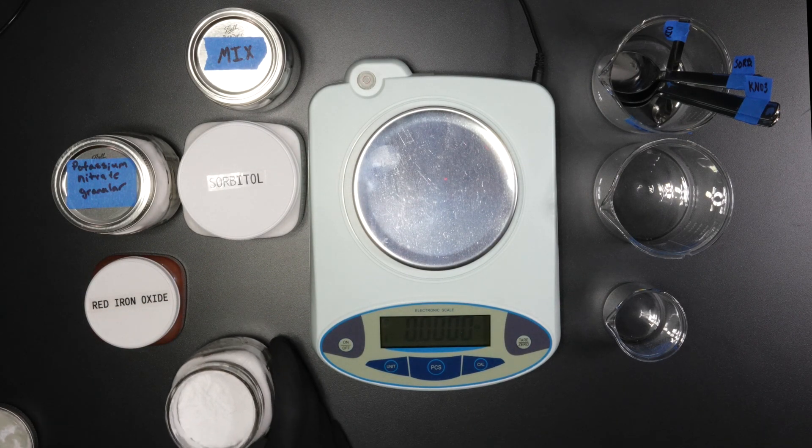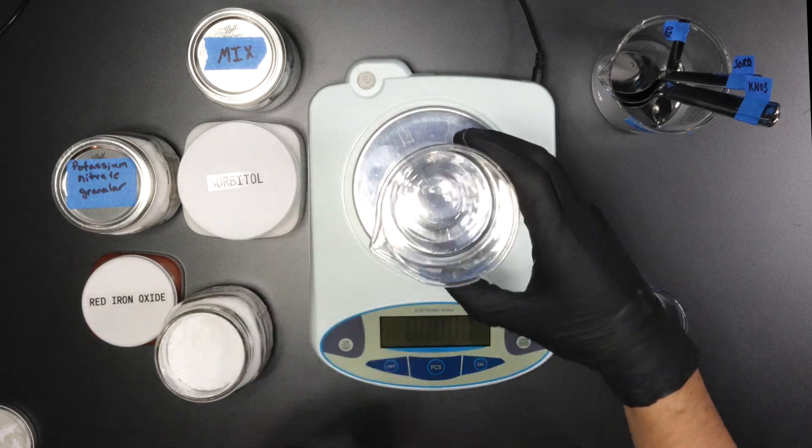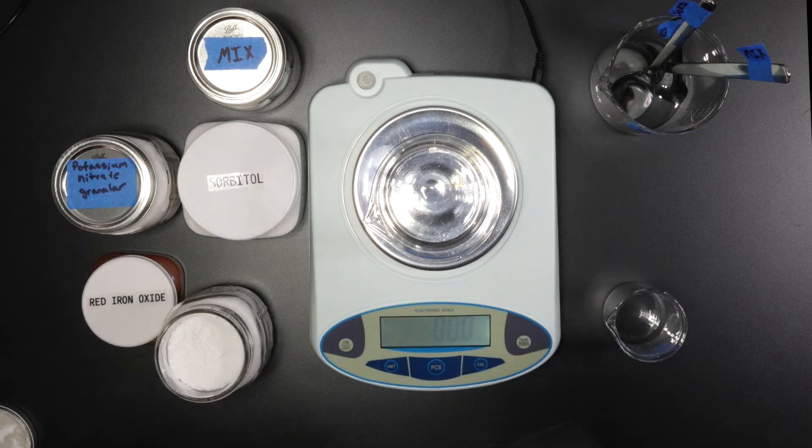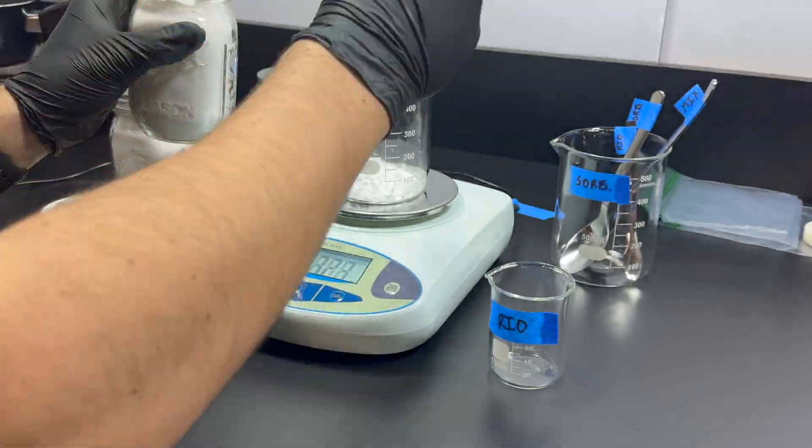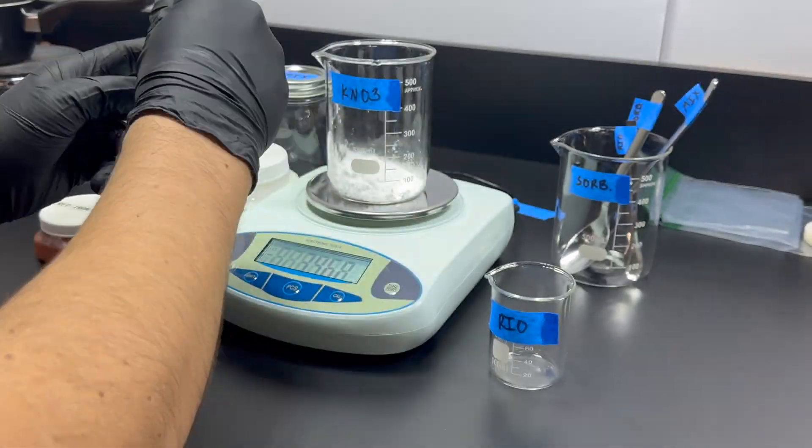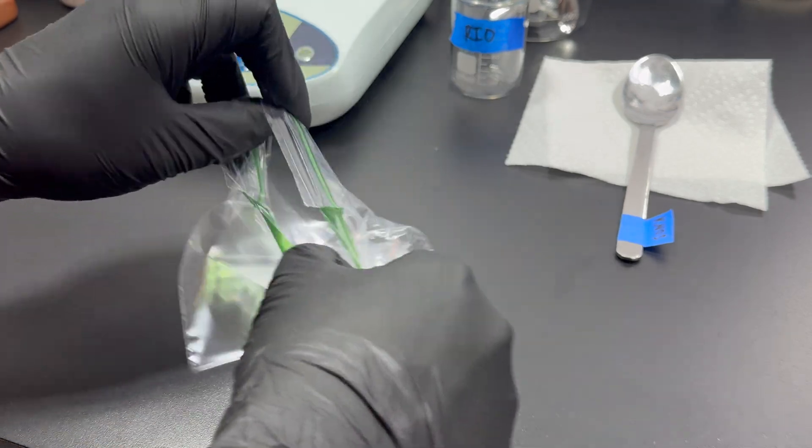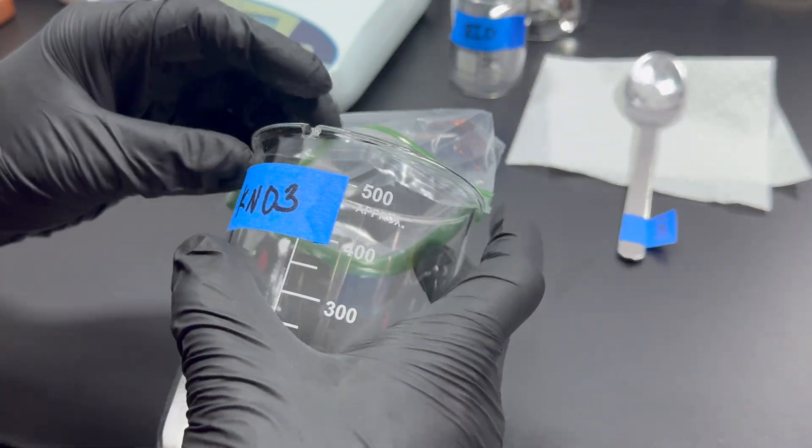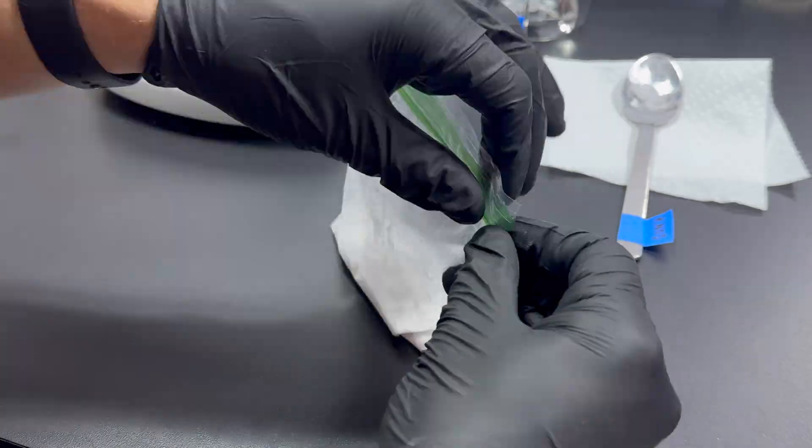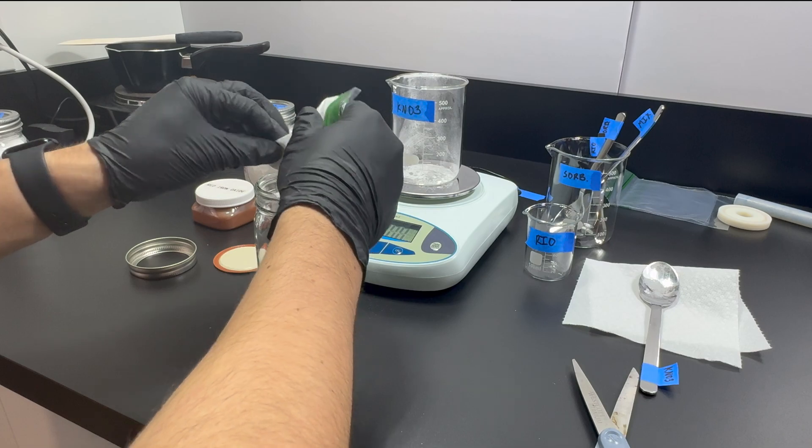When working with fine chemicals like the potassium nitrate, be sure to work in a well-ventilated area and keep the dust down. You do not want to inhale this stuff. Before adding it to the mixing jar, I add it to a plastic bag and mash it up. The milled potassium nitrate tends to clump up from moisture in the air. This helps break up any large clumps, and then I add it to the mixing jar.